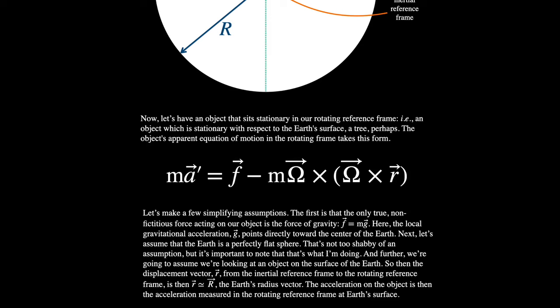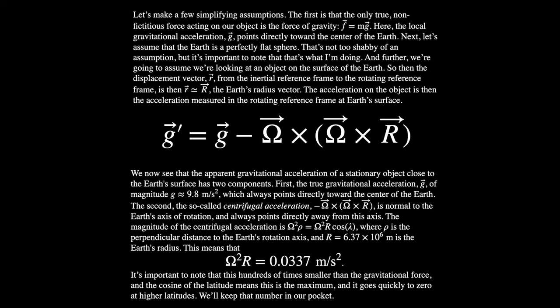Let's make simplifying assumptions. First, we're going to have only one true force — gravity — so we replace the force arrow with mass times the gravitational acceleration, which always points towards the center of the Earth. We'll also assume the Earth is a perfectly spherical sphere. We assume the object is on the surface of Earth, not jumping up or down. The displacement vector from the inertial reference frame at the center of the Earth to the rotating reference frame shall be the Earth's radius vector. The effective acceleration at the Earth's surface then gives us our equation.